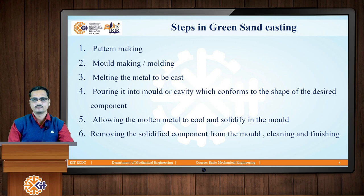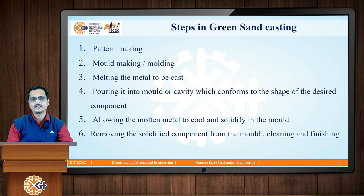After creating the mould cavity, in step number 3 we melt the metal to be cast. For example, if we want to produce a casting of cast iron, we melt the cast iron using furnaces. In foundries we use induction furnaces to produce this molten metal of the material which is to be cast.